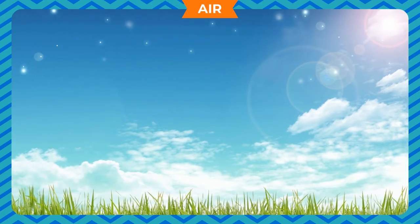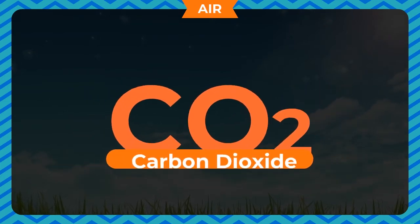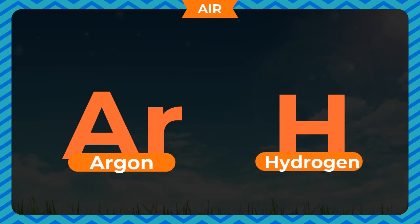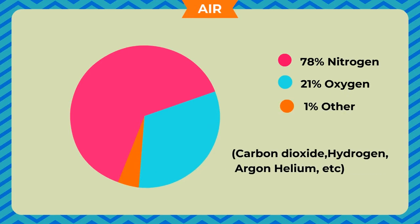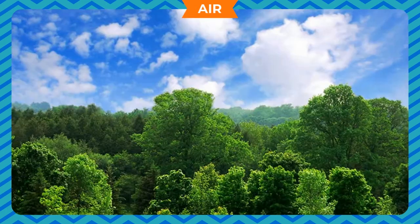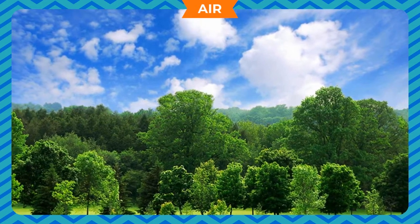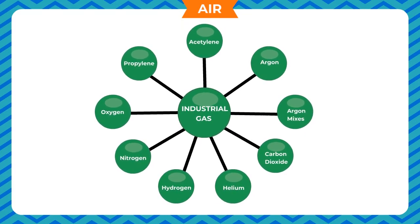Air is a mixture of gases like nitrogen, oxygen, carbon dioxide, argon, hydrogen, etc. It has about 78% nitrogen, 21% oxygen, and the remaining 1% is other gases — carbon dioxide, hydrogen, argon, helium, etc. — whose proportion may vary according to weather and environmental conditions. Out of all these gases, oxygen is the most important as it is required by all living beings for breathing.